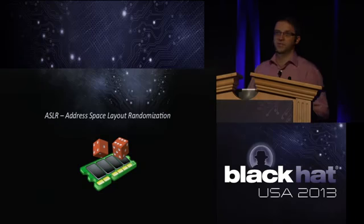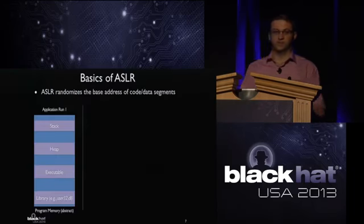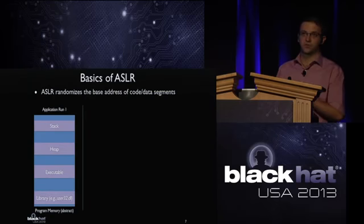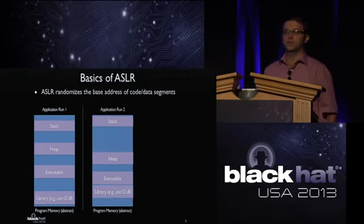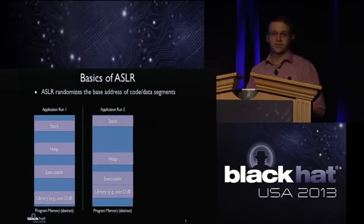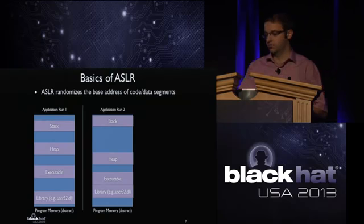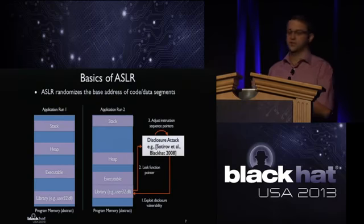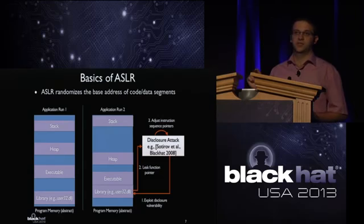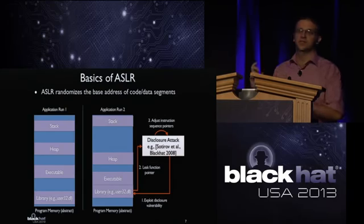One potential defense is Address Space Layout Randomization, ASLR. The basic idea is to randomize the start or base address of code and data segments. If the application is restarted, all base addresses get randomized. However, ASLR is vulnerable to memory disclosure attacks: an attacker retrieves a single runtime address — such as a leaked function pointer — and adjusts all gadget addresses by the randomization offset. This works because ASLR only randomizes the start address; the internal structure remains the same.